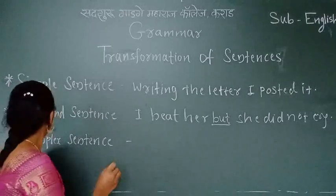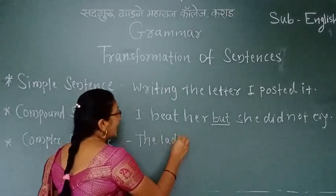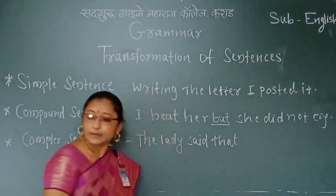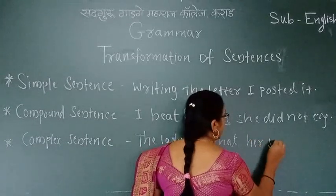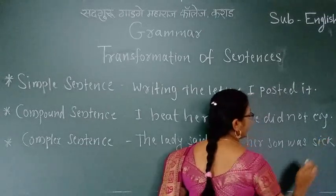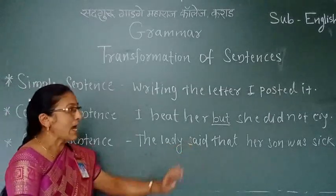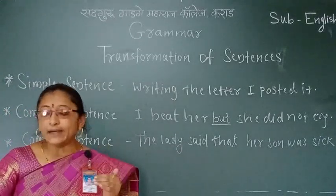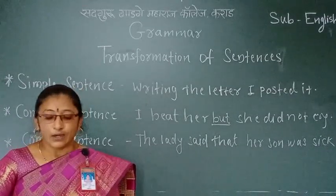For example, a complex sentence: 'The lady said that her son was sick.' This is one example of a complex sentence. A sentence which is made of one main clause and one or more subordinate clauses is called a complex sentence.